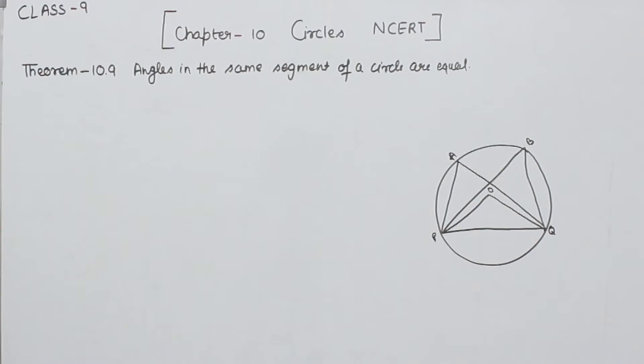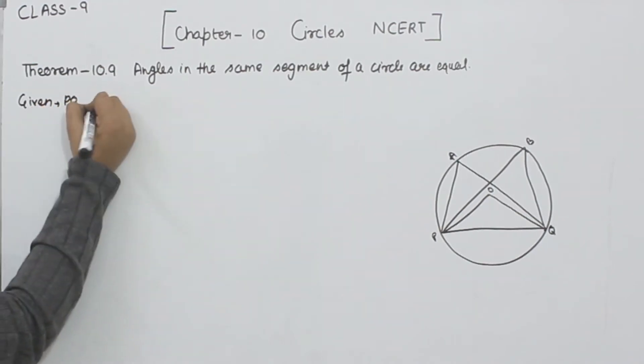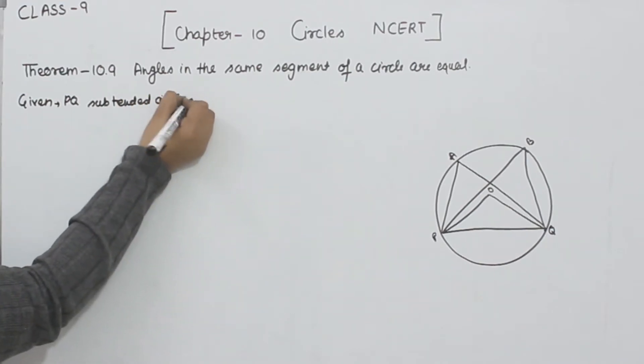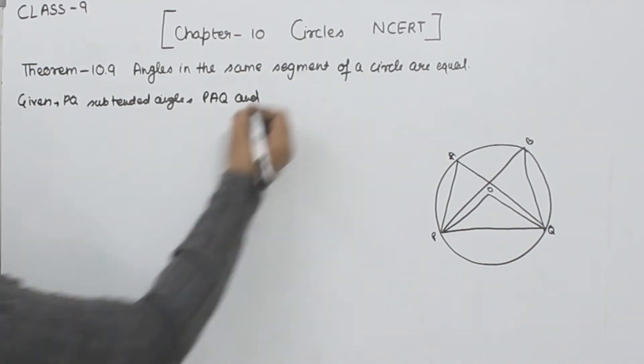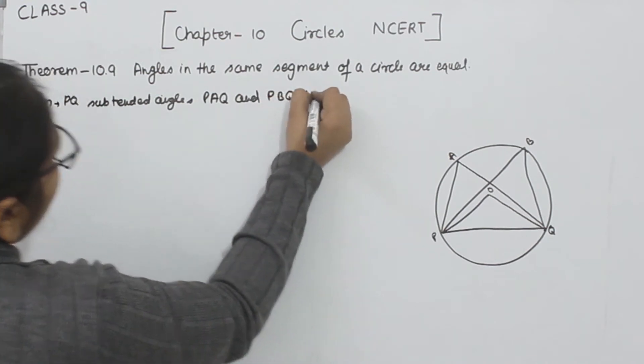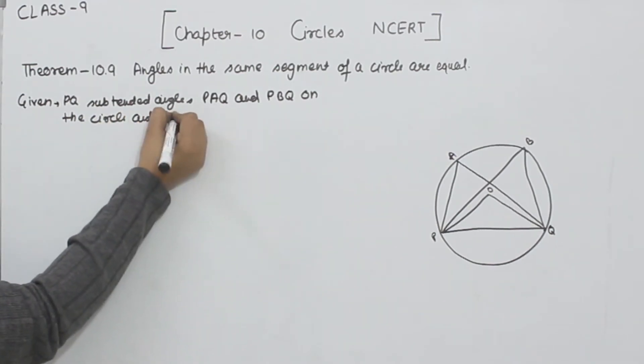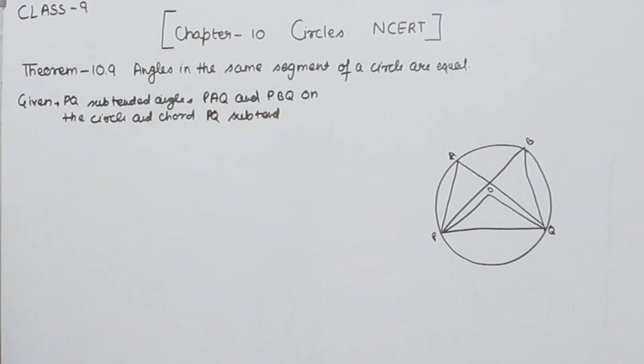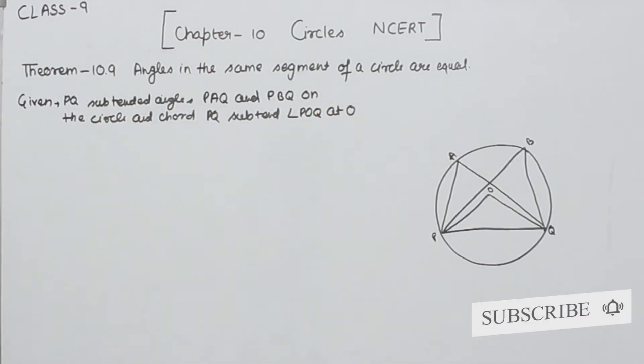So this one we have to prove as per the question. So what we have given in the question I am going to write here. PQ subtended angles PAQ and PBQ on the circle and chord PQ subtended angle POQ at O. Angle POQ at O.